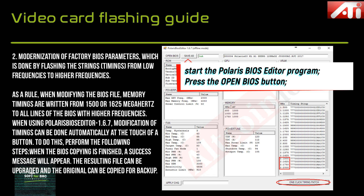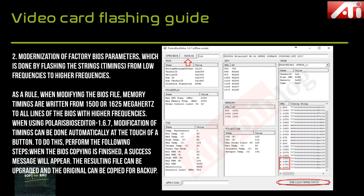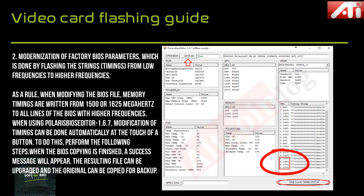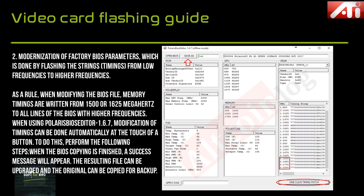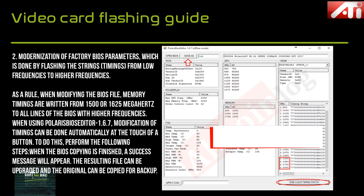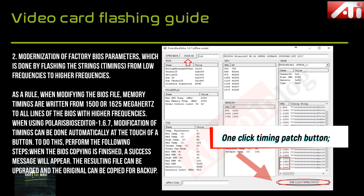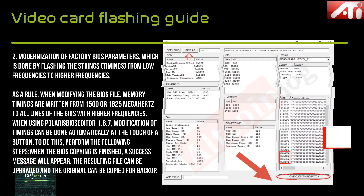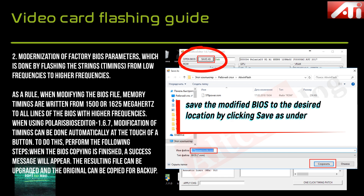Start the Polaris BIOS Editor program and press the Open BIOS button. Typically, when modifying the BIOS file, memory timings are copied from the 1500 or 1625 MHz frequency to all higher frequency BIOS lines. When using Polaris BIOS Editor, modifying the timings can be done automatically at the touch of a button. When the BIOS copy is complete, a success message will appear.